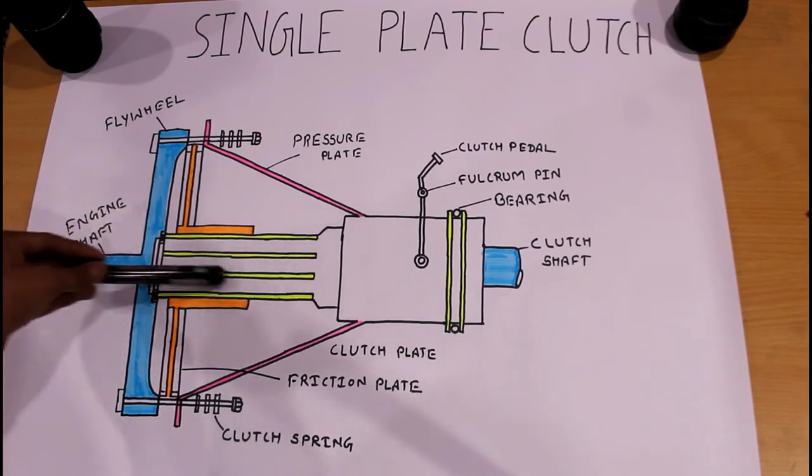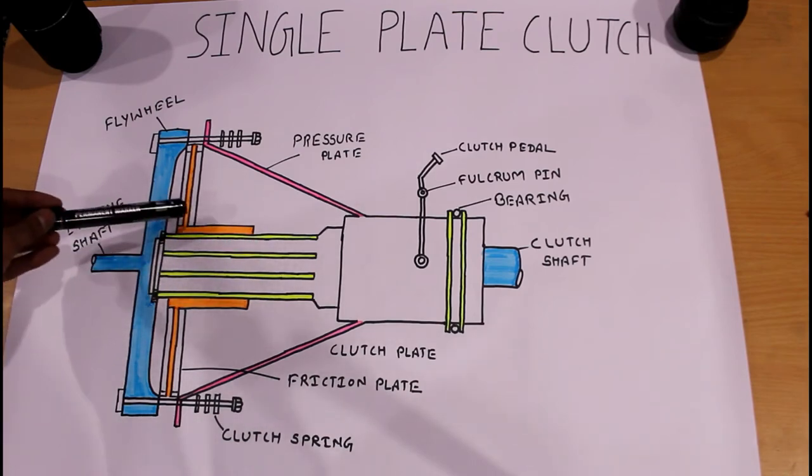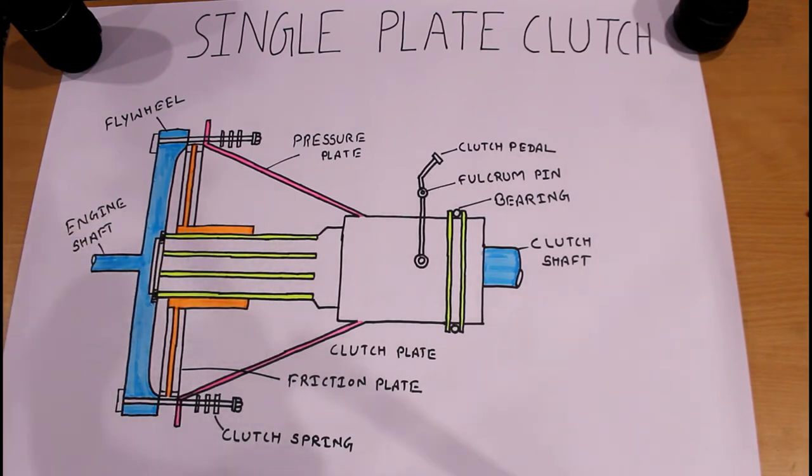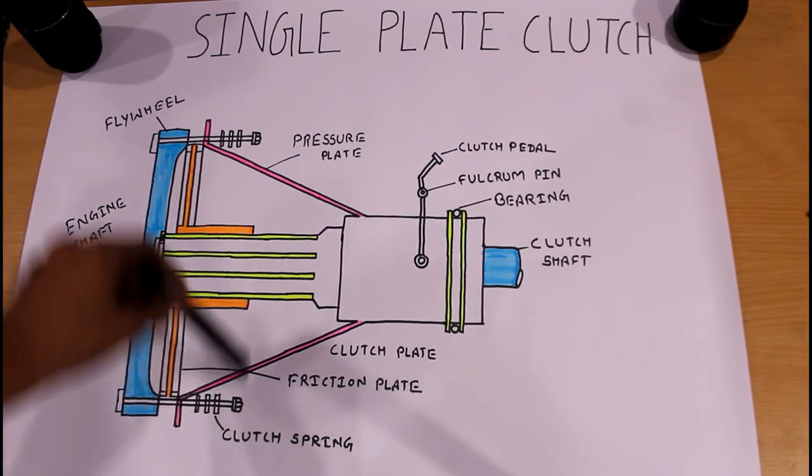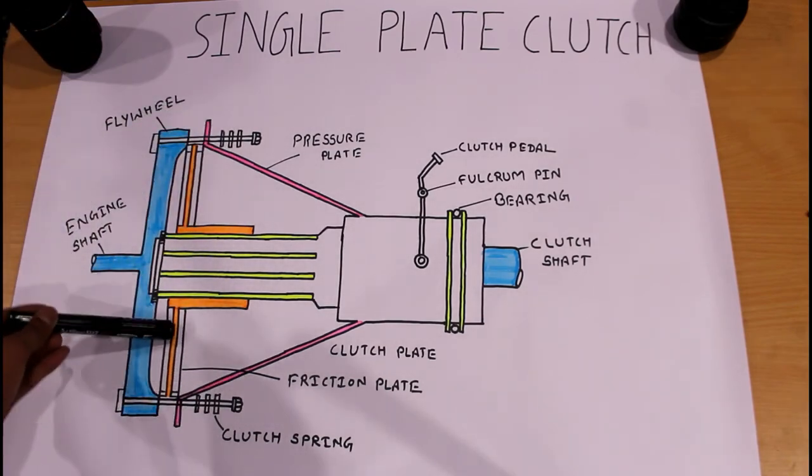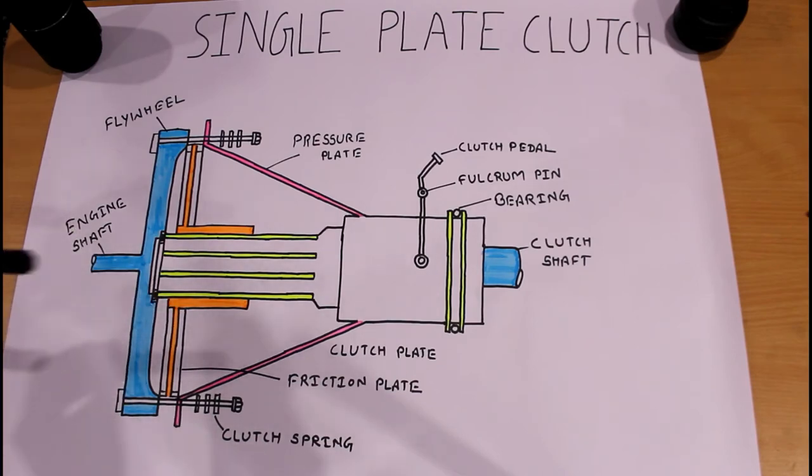These are splines on these plates that can be moved forward and backward. Now in the engaged position, with the help of these clutch springs only, our pressure plates are continuously in an engaged position with friction plate and clutch plate, and this assembly works properly.